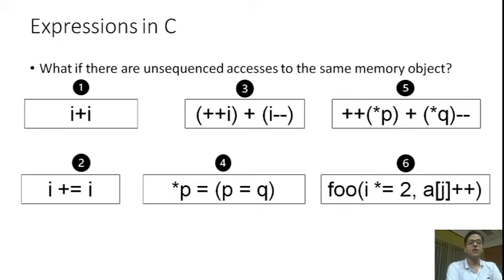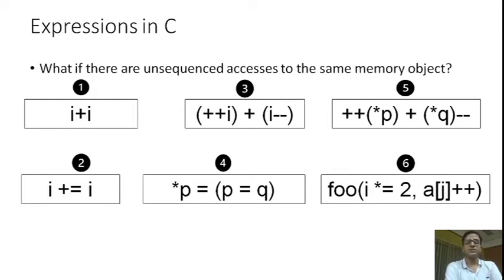Consider what happens if there are unsequenced evaluations that involve concurrent accesses to the same memory object. Such a situation is not very different from a data race, and we also call it an unsequenced race in our work.